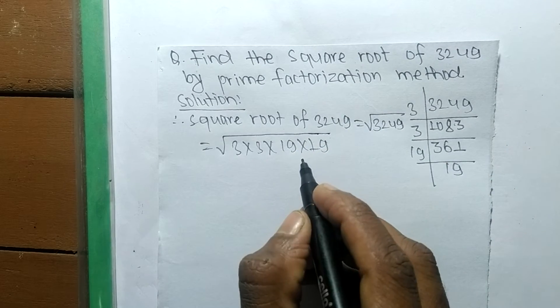3249. Now we write the prime factors of 3249. So it is 3 times 3 times 19 times 19. After writing all the prime factors, now we have to make the square of these prime factors.